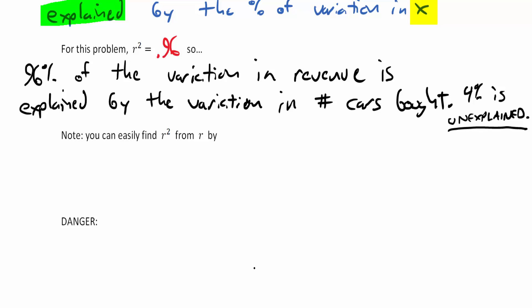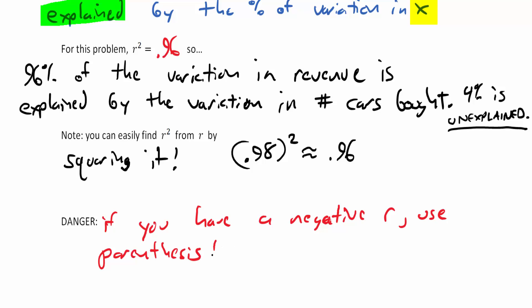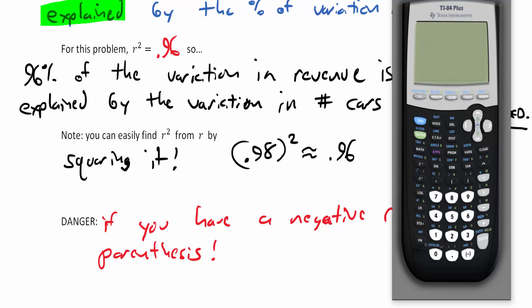Now it is true, if you don't have the linear regression t-test, you can easily find r-squared from r by squaring it. Which means you can take your point ninety-eight, you can square that, and that will give you the approximate point ninety-six. Obviously the more decimals you use the better. But there is a danger in doing this. If you have a negative, if you have a negative r, use parentheses.